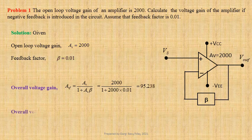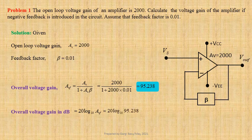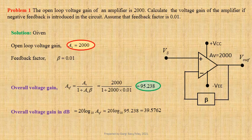Overall voltage gain in dB = 20 log₁₀(AvF), which gives us 39.5762 dB. Here we observe that on application of negative feedback, voltage gain is reduced.